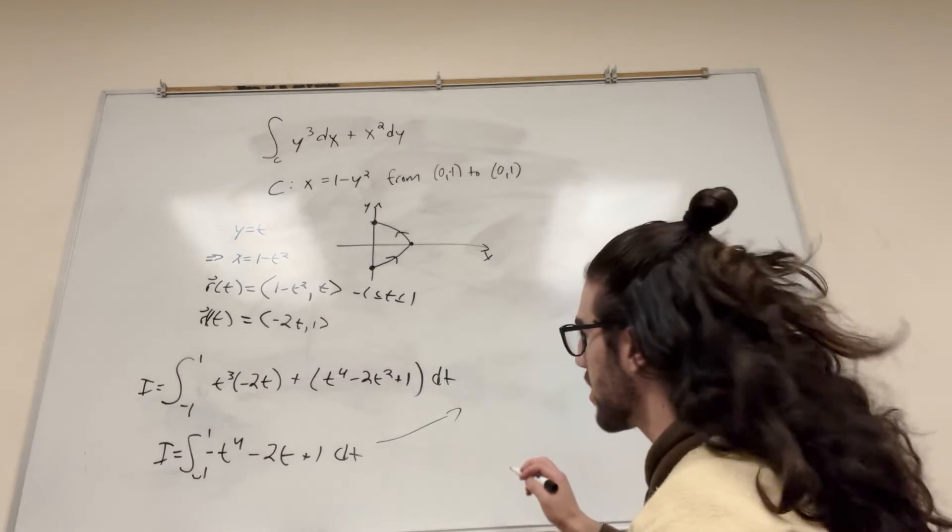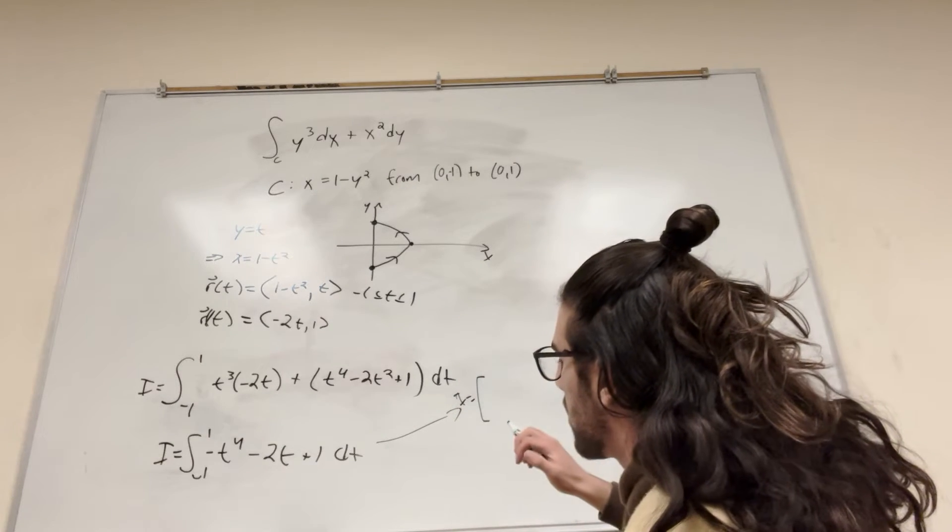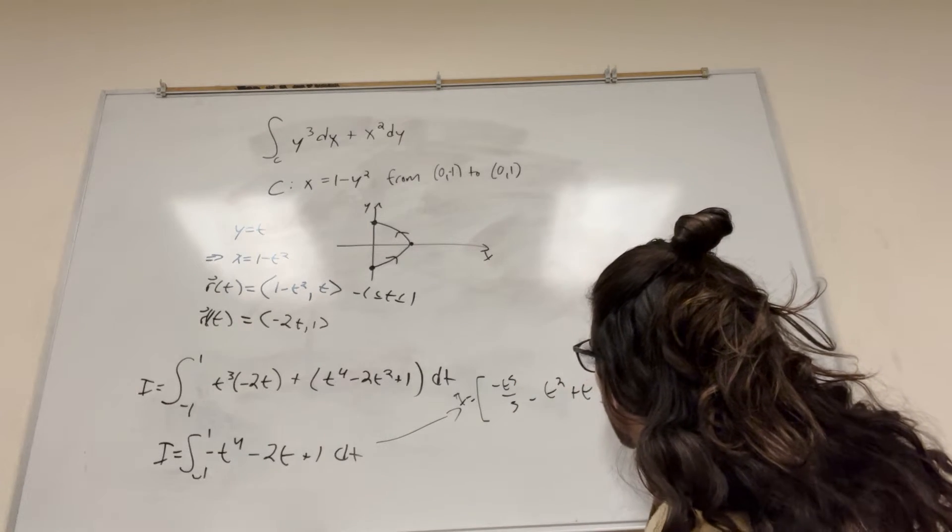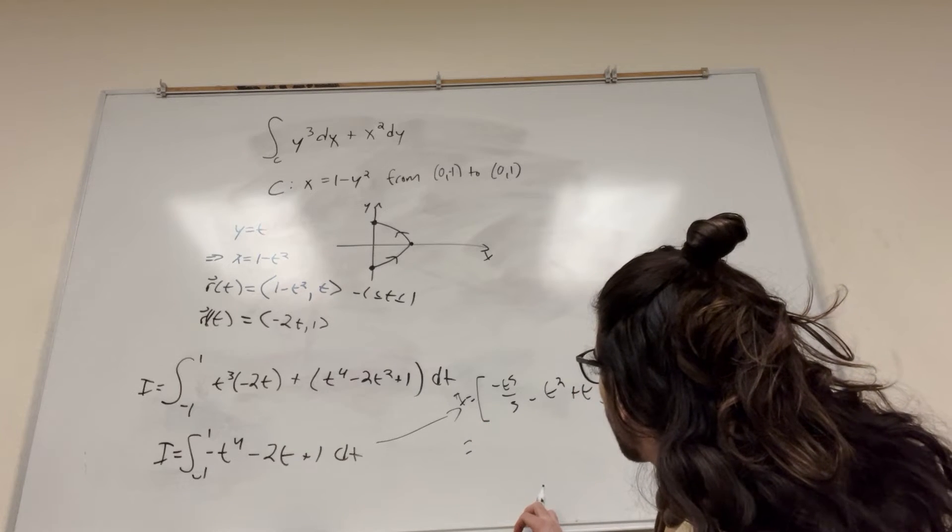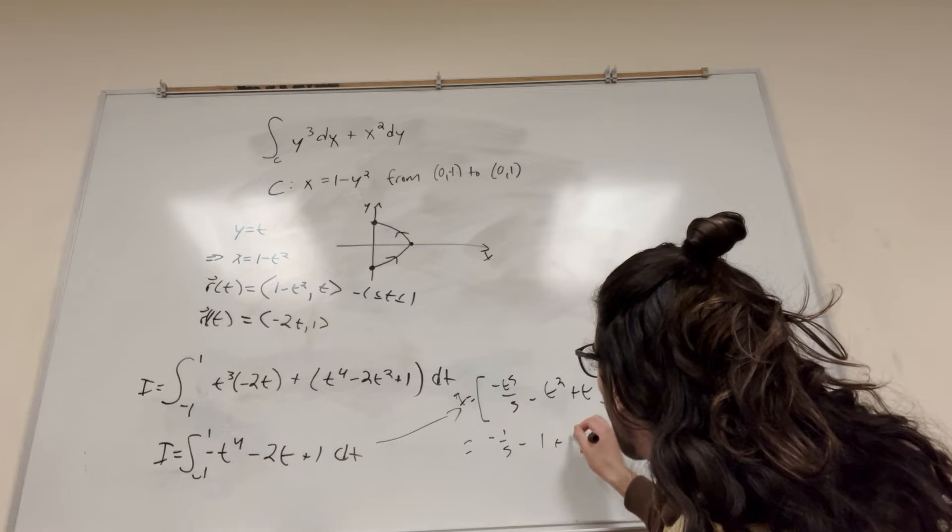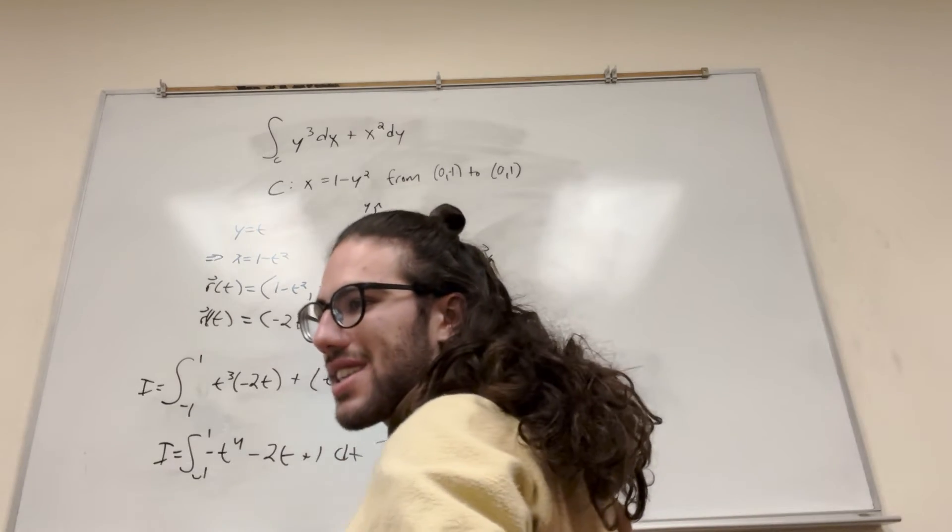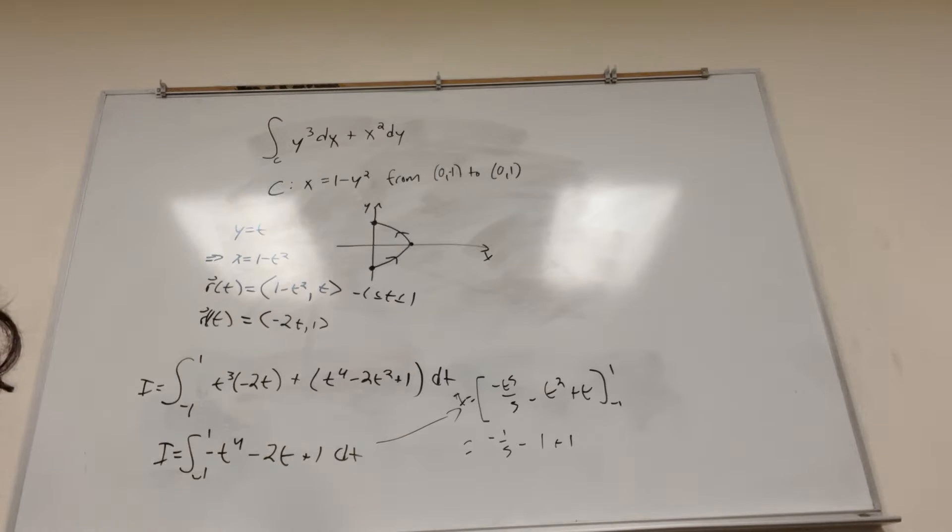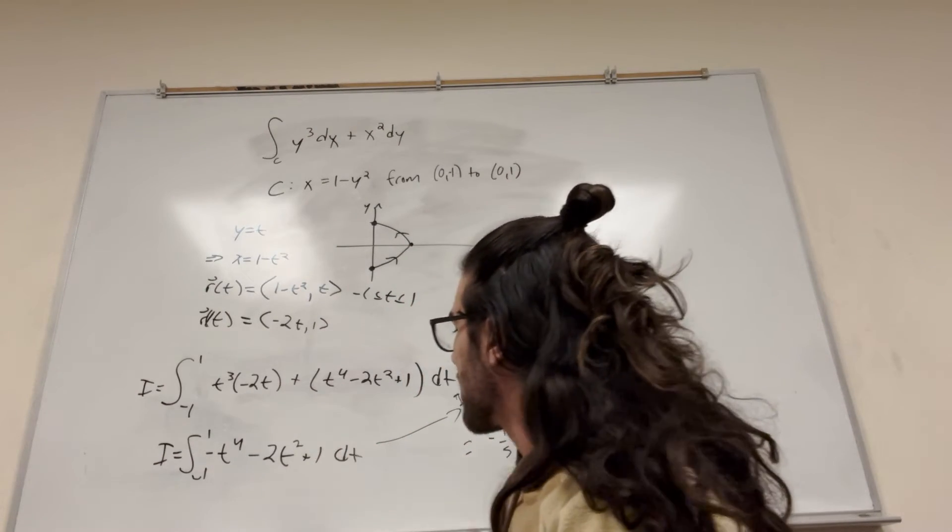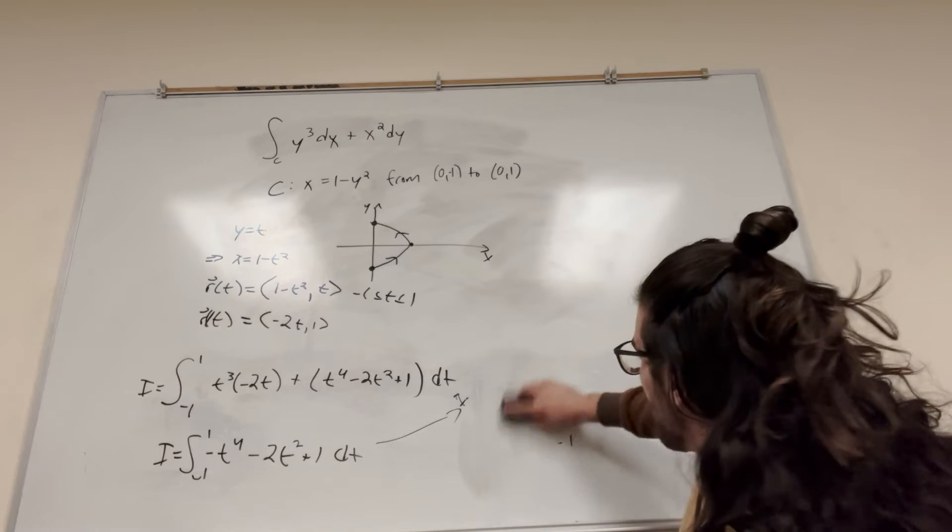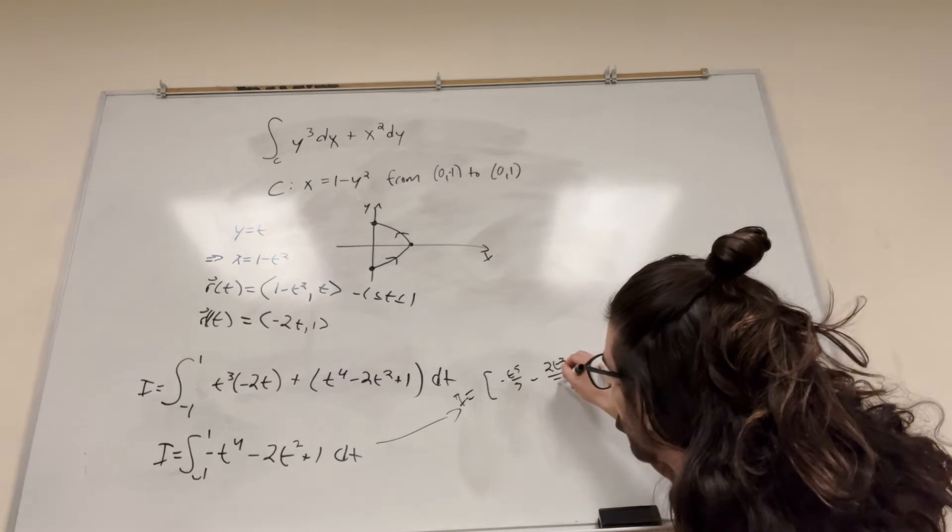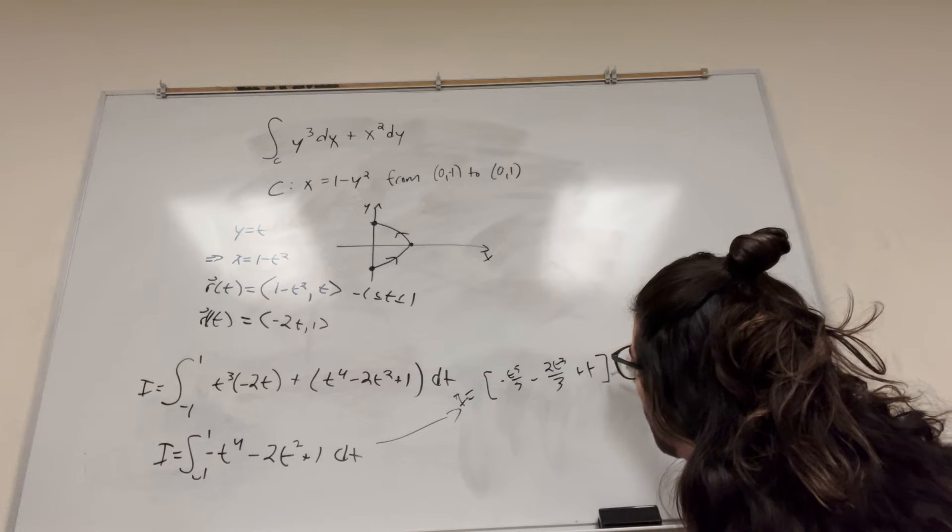So we can just do some power rule for this part. So it's going to be equal to -t⁵/5 - t² + t from -1 to 1. This is going to be equal to, so it's going to be -1/5 - 1 + 1. Hold up. I'm going to check my notes. Make sure I'm doing this right. I don't have my notes for this, do I? Hold up. I forgot to bring the square down. I knew something was wrong. Okay. Integral is not equal to that. It's equal to -t⁵/5 - 2t³/3 + t actually. From -1 to 1.